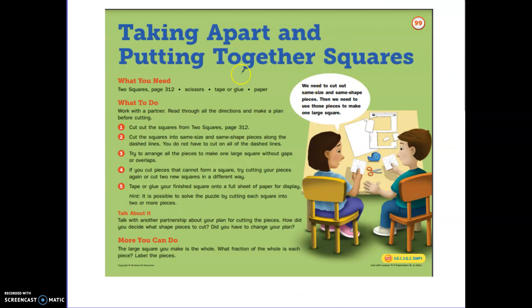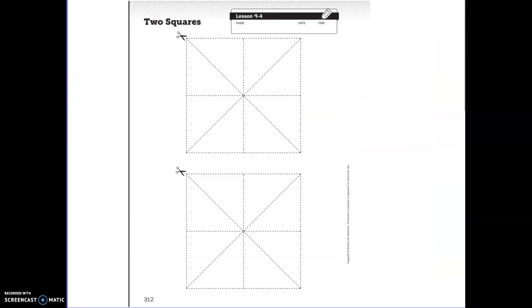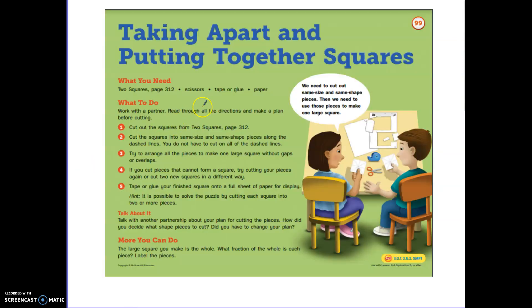Another activity that you're going to work on with this lesson is called Taking Apart and Putting Together Squares. You're going to need two squares that I will give you, scissors, tape or glue, and some paper to do some taping or gluing onto. You can work with a partner, somebody at home. Read through all the directions below and make a plan before cutting. Cut out the squares from two squares on page 312, which is the page in your folder. Cut the squares into same size and same shape pieces along the dashed or dotted lines.